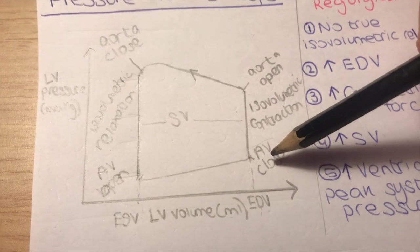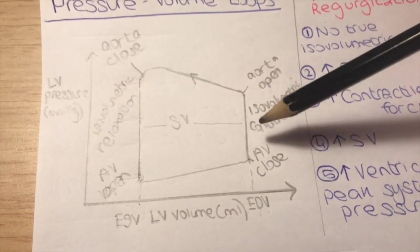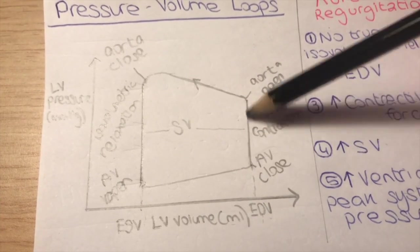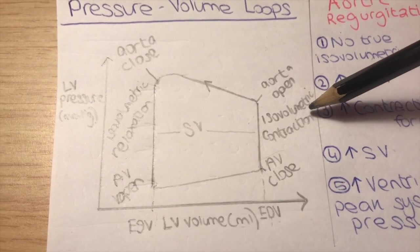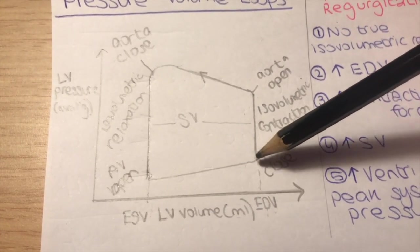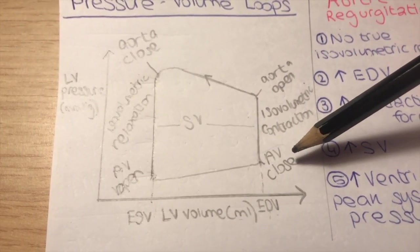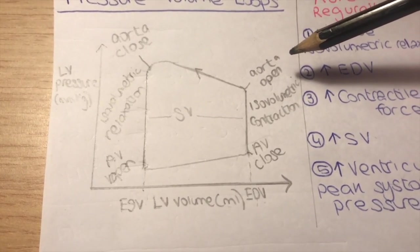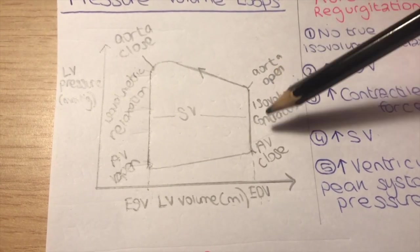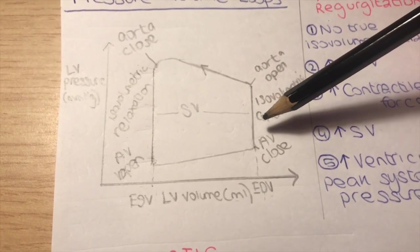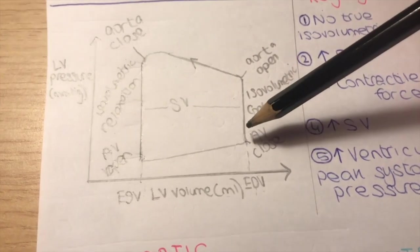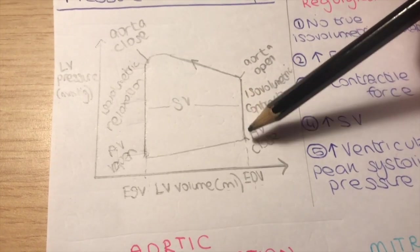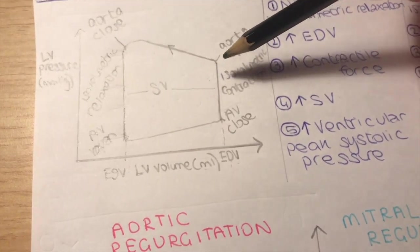Over here we can see that the pressure in the left ventricle is increasing while the volume remains the same — this is referred to as isovolumetric contraction. The AV valve is closed because the pressure in the ventricle became higher than the pressure in the atrium, but the aortic valve still isn't open because the aortic pressure is still higher than the ventricular pressure. So the ventricle is contracting but blood remains in the ventricle, which is why the left ventricular volume does not change.